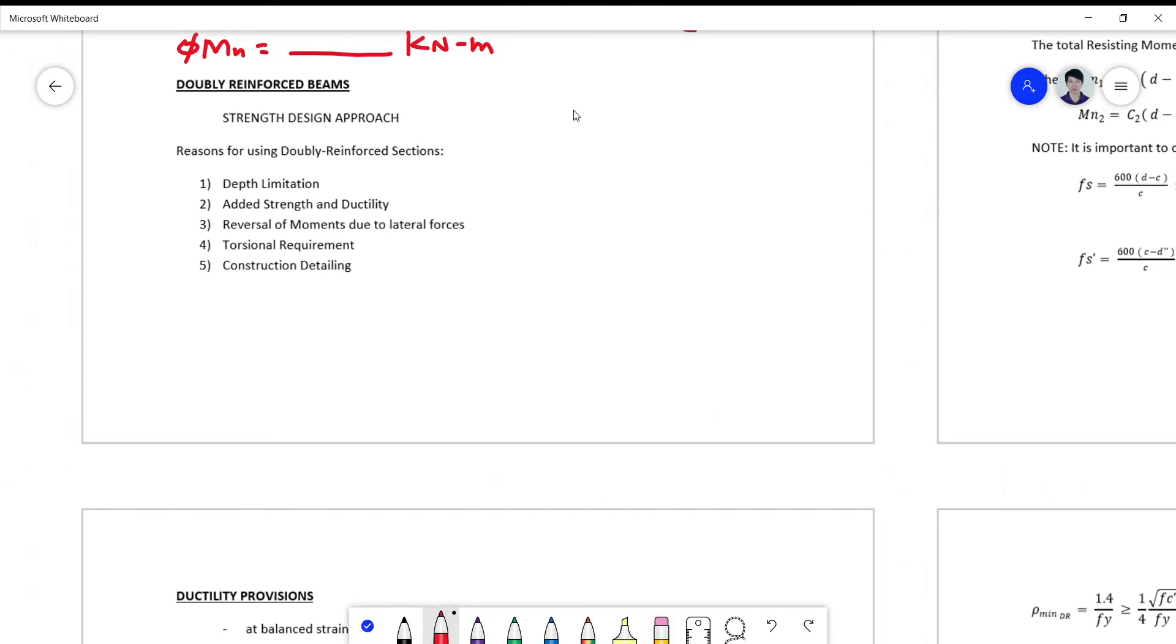supposing that I have here a beam that is restricted to a total height or depth of say 400 millimeters, so I can't add any more additional height since this is already a limitation.